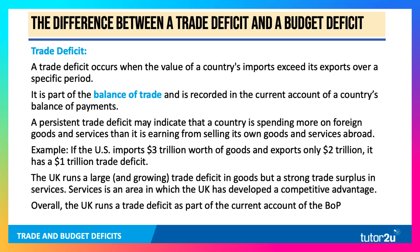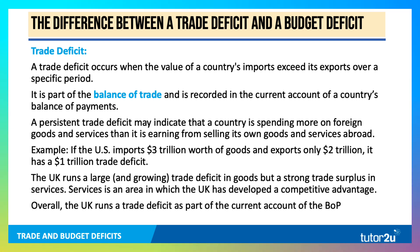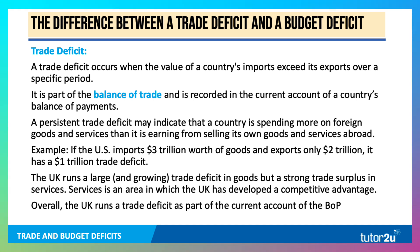If a country is running a trade deficit from year to year — a persistent trade gap — that can indicate that the country is spending a lot more on foreign goods and services than it's earning from selling their own products overseas. That's a net outflow from the circular flow. If the US imports three trillion worth of goods but exports only two trillion, then it's running a trade deficit of one trillion.